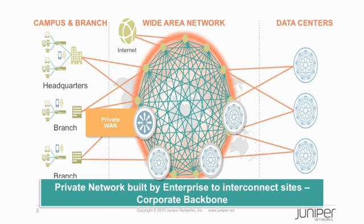Private WAN infrastructure consists of corporate owned and managed equipment connected in a mesh to provide a corporate backbone. The private WAN has to provide a secure path for the exchange of information and delivery of services and applications between sites.